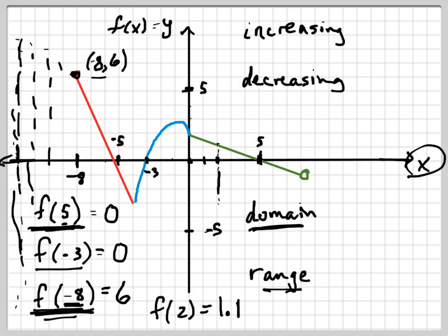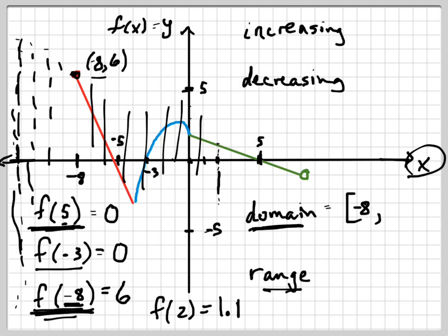So does it include negative 8? Yes, it does. So the domain equals — put a closed bracket to mean that it includes negative 8, comma — and then scanning across. Is it touching? Yeah, touching all the way. What happens right here at positive 8? What happens right at positive 8? Is it going to touch it when I draw a line at positive 8? No. What does this open circle mean? The open circle means that it doesn't quite get there. Everything right up to that it will touch, but it won't touch that.